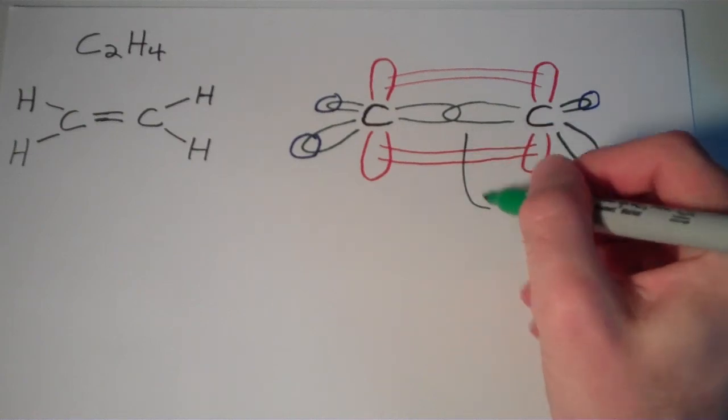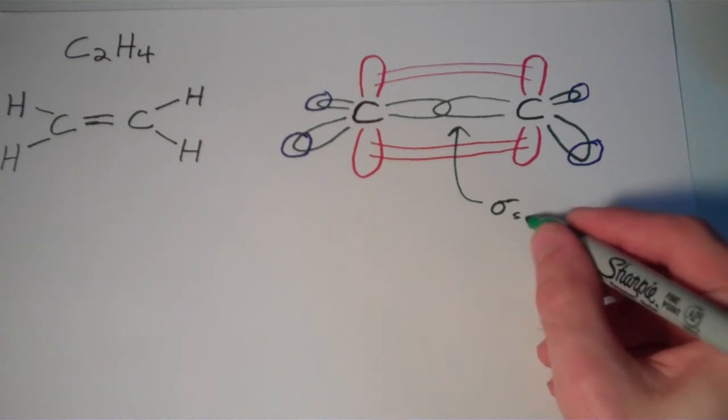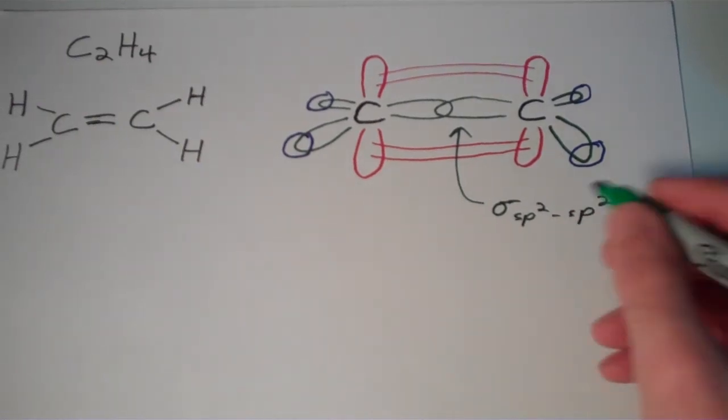So let me go ahead and write that in. So this bond down here, this bond up here, this is a sigma bond between an sp² hybrid and another sp² hybrid.